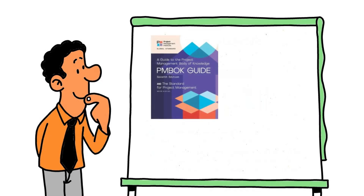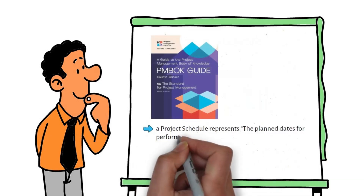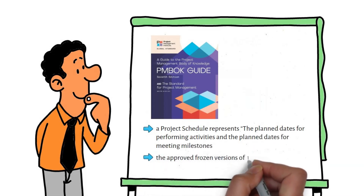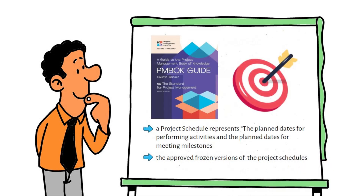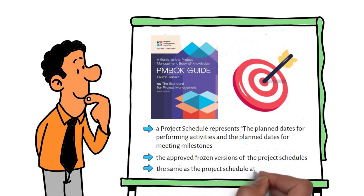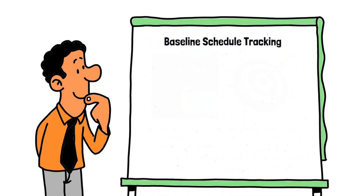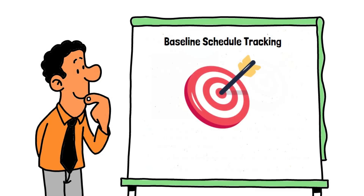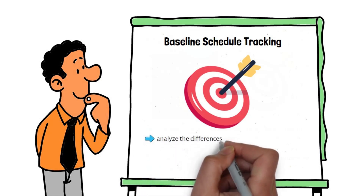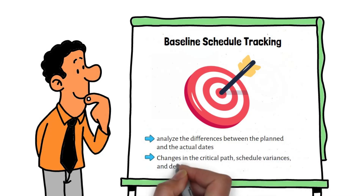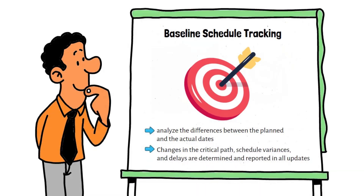According to PMI's PMBOK Guide, a project schedule represents the planned dates for performing activities and the planned dates for meeting milestones. Baselines are the approved, frozen versions of the project schedules. Before updating the schedule for the first time, the baseline schedule is retained as a target — meaning the baseline schedule is the same as the project schedule at the beginning. After approval by stakeholders, schedule tracking is used to analyze differences between the planned and actual dates; changes in the critical path, schedule variances, and delays are determined and reported in all updates.